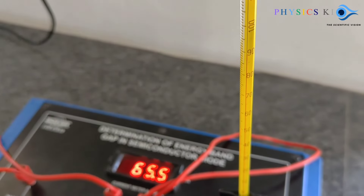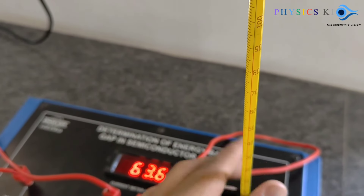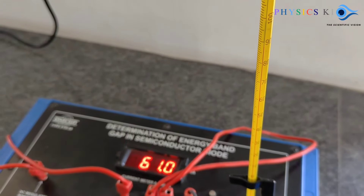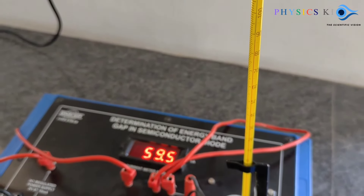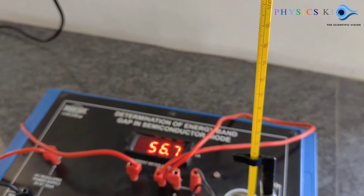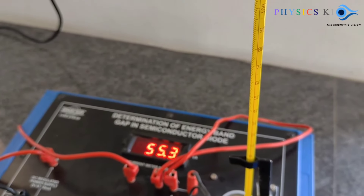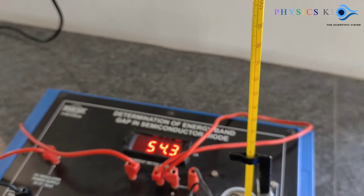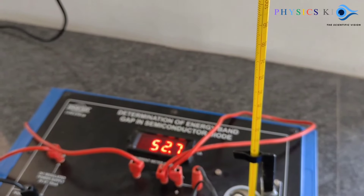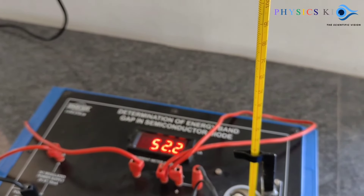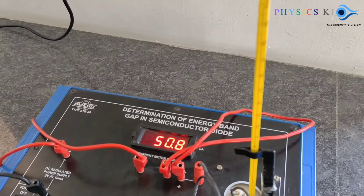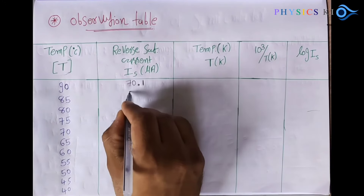We are now waiting for the temperature to reach 85 degrees Celsius. The video is fast-forwarded a little. You can see the thermometer temperature decreasing, and according to the temperature the diode current is also decreasing. Now it is 85 degrees Celsius, and the value is 51.1 microampere.